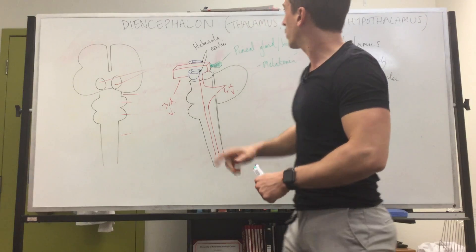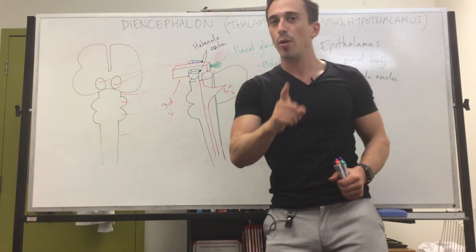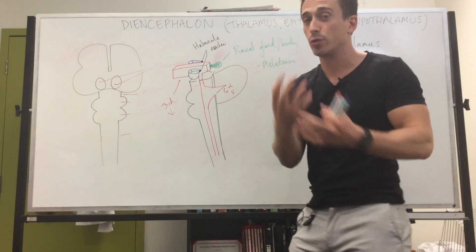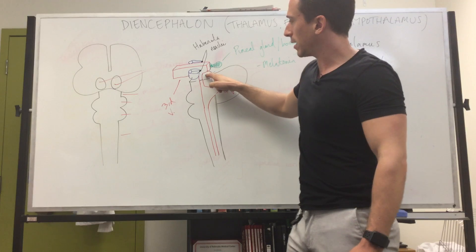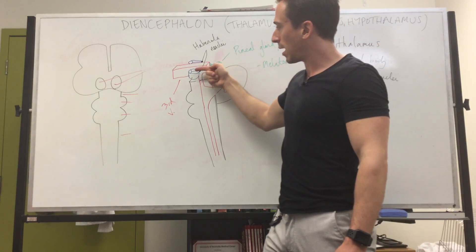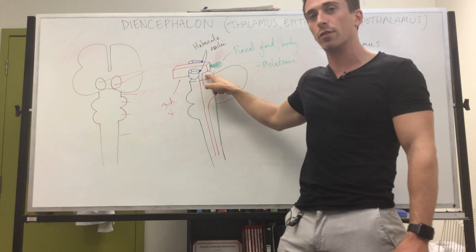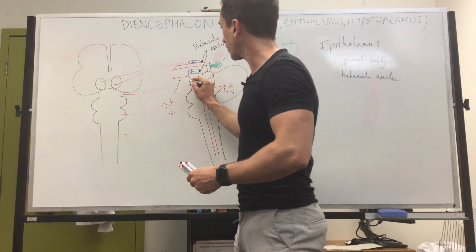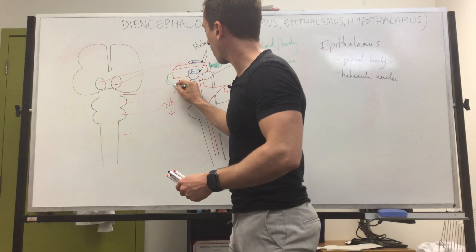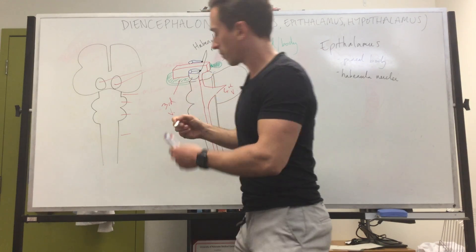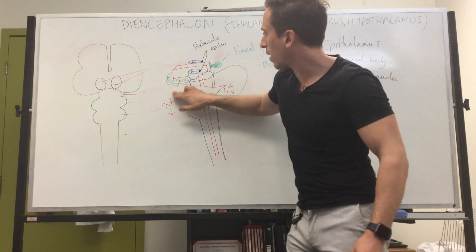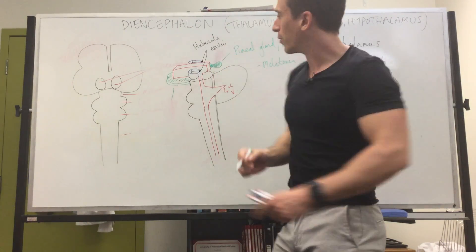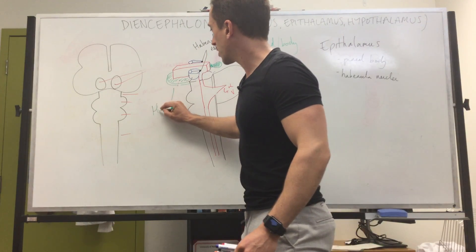The last component we need to cover is the hypothalamus. The third ventricle, which holds and produces cerebrospinal fluid, sits on top of the midbrain, but anteriorly it goes past and beyond the midbrain and is no longer resting on the floor of the midbrain. In actual fact, it rests upon another group of gray matter. This gray matter is known as the hypothalamus — 'hypo' means below, and you can see the hypothalamus is actually below the thalamus.